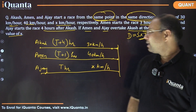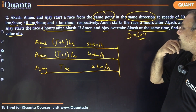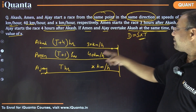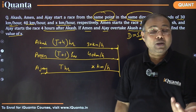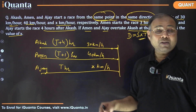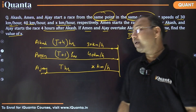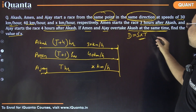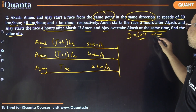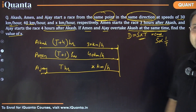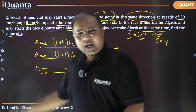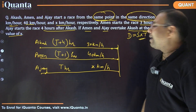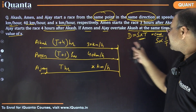Another approach is to write d/s = t, so d/30 minus d/40 equals three — their time difference. You can also use proportionality: when distance is constant, speed and time are inversely proportional. I'll demonstrate all three methods. Let's start with the first equation method — speed into time remains constant.